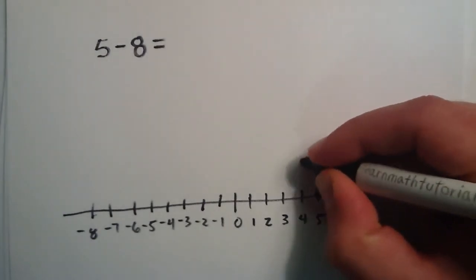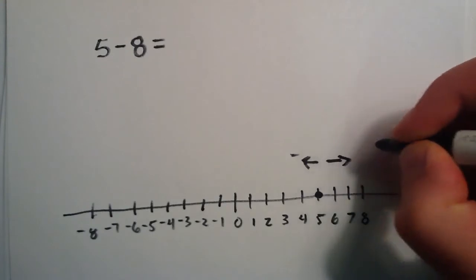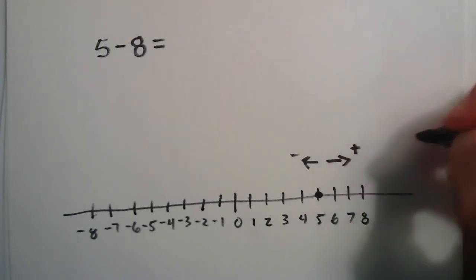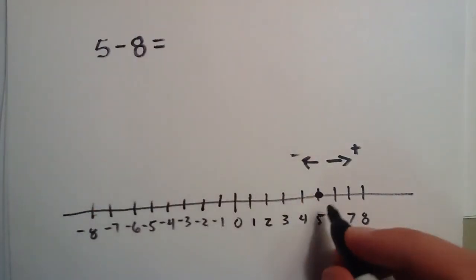So we can start at the number 5. And remember, take away or subtraction means go to the left, and addition or adding goes to the right. Okay, so starting at 5, taking away or subtracting 8.